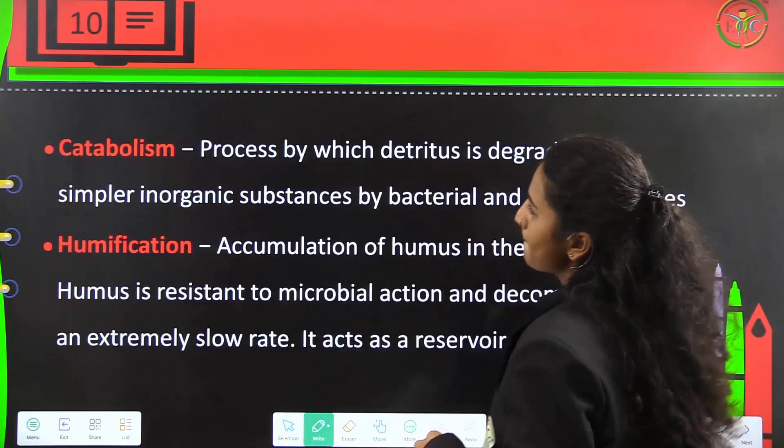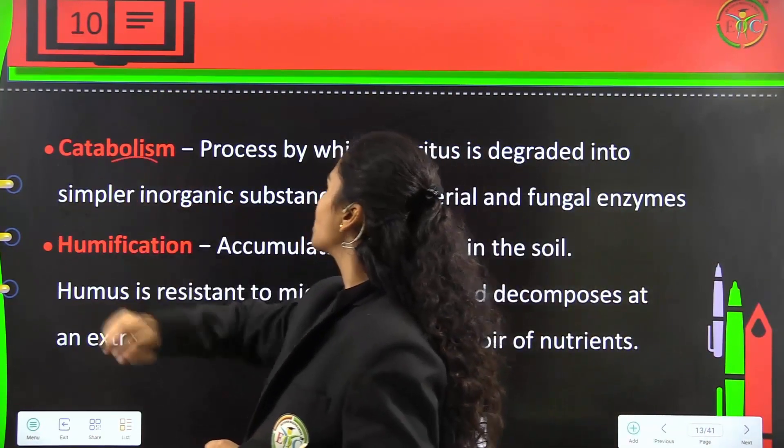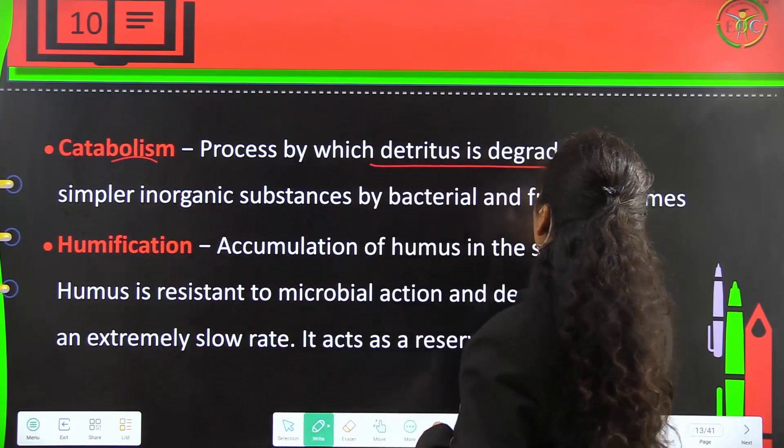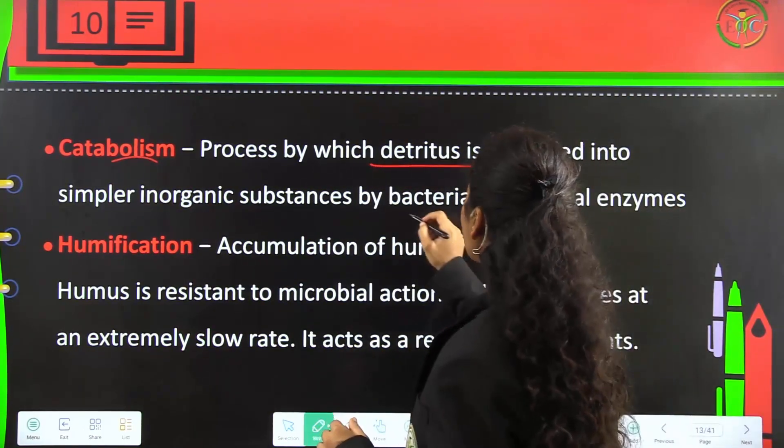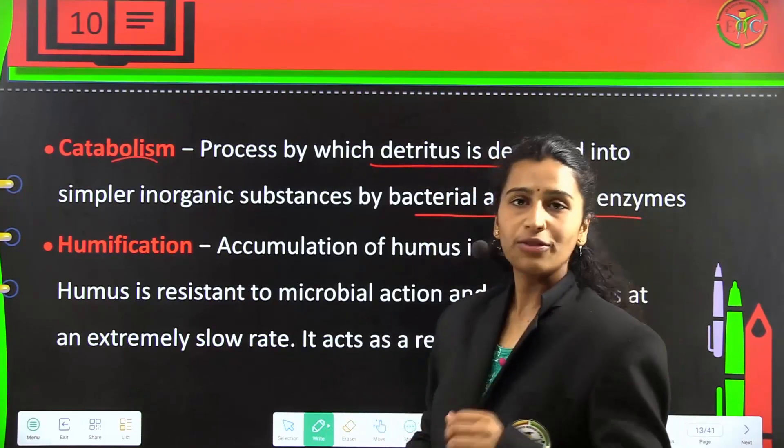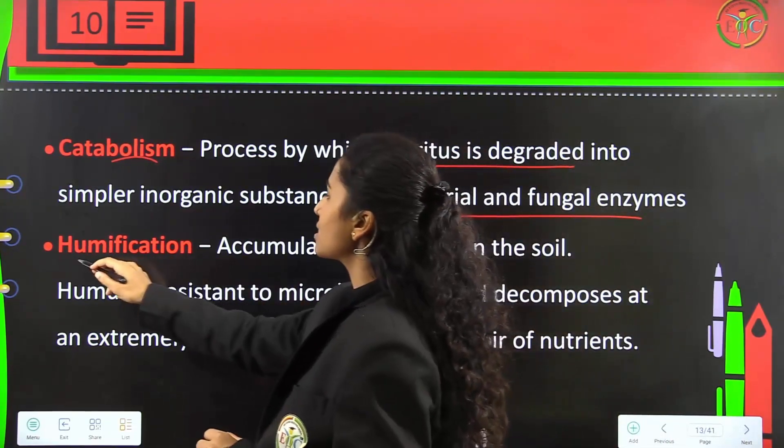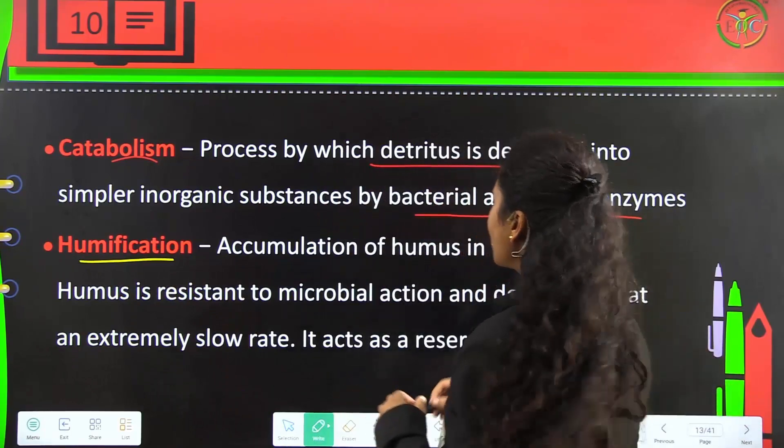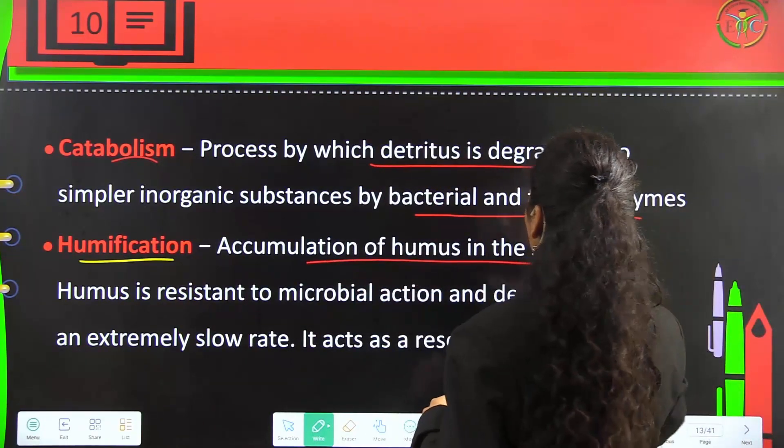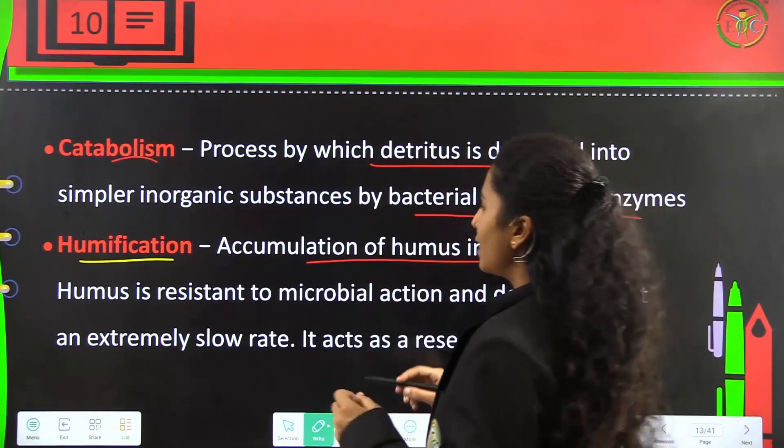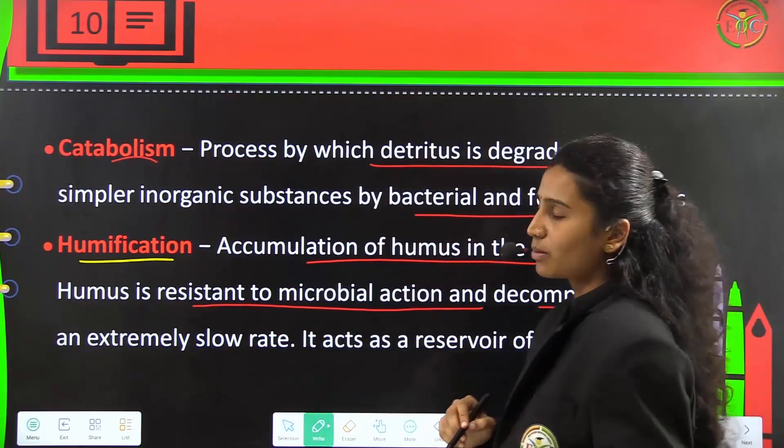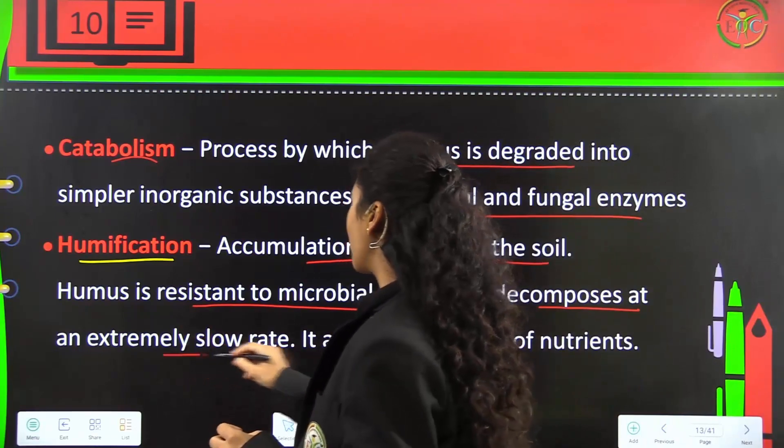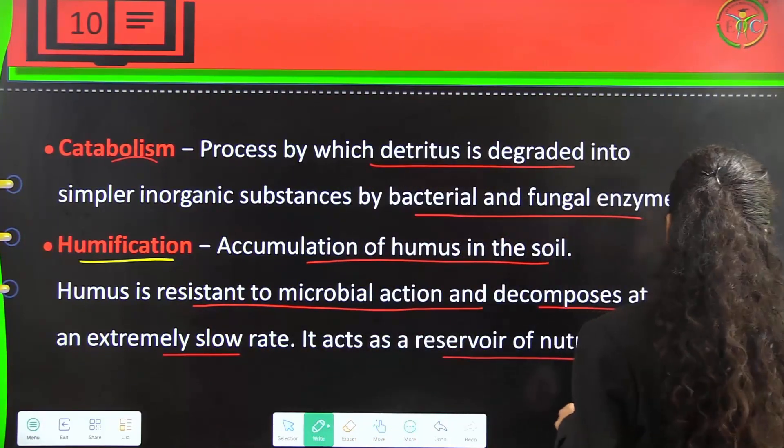Catabolism is a process by which detritus is degraded into simple inorganic substances by bacterial and fungal enzymes. Next is humification, the accumulation of humus in the soil. Humus is resistant to microbial action, decomposes at an extremely slow rate, and acts as a reservoir of nutrients.